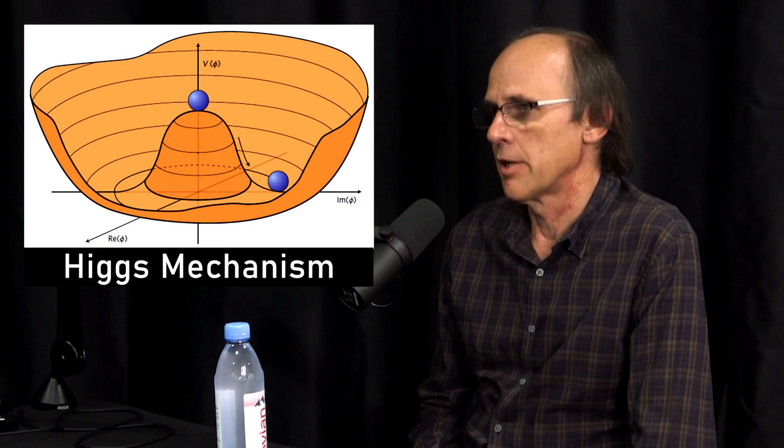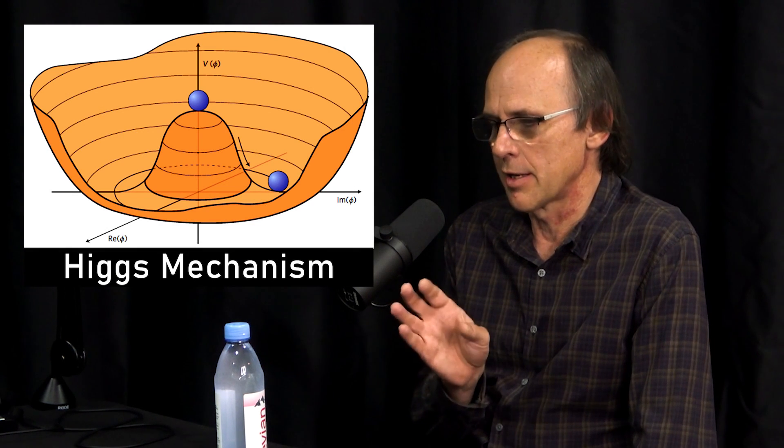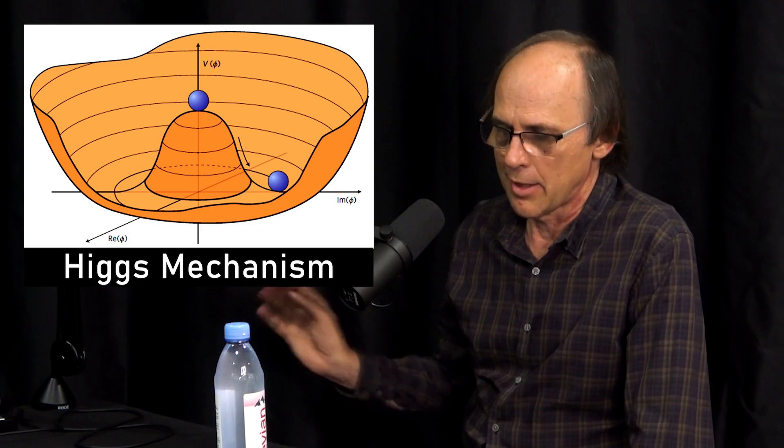If you look at the standard model, it has these very deep, beautiful ideas. But there are certain aspects that are not beautiful — to make the thing work, you have to throw in lots and lots of extra parameters at various points. A lot of this has to do with the so-called Higgs mechanism and the Higgs field. If you forget about the Higgs field, the rest of the theory is very constrained with very few free parameters — really a very small number of parameters and a few integers which tell you what the theory is.